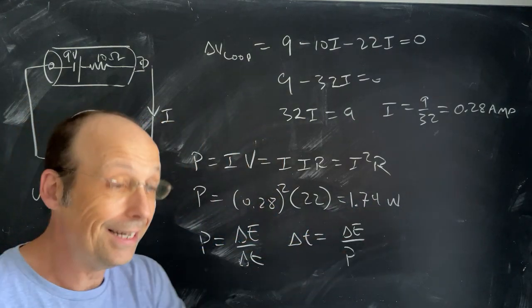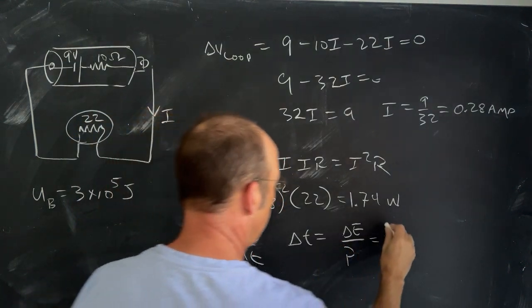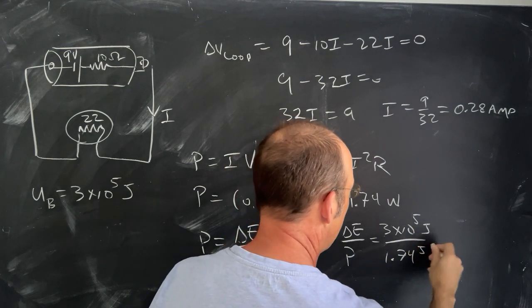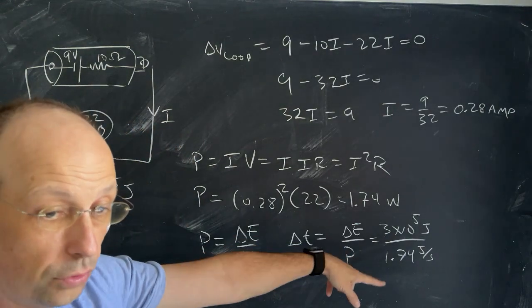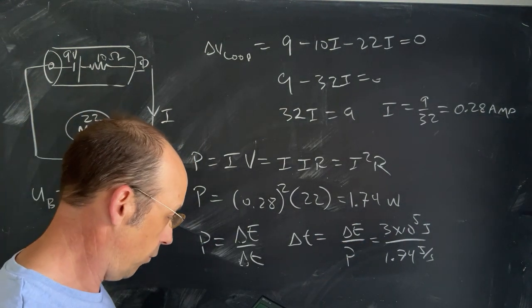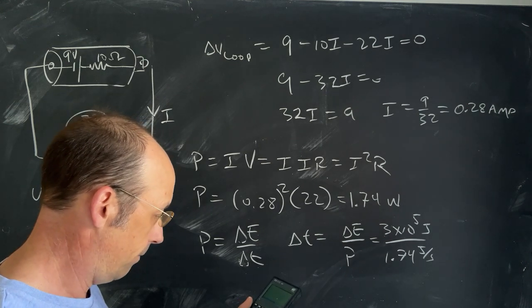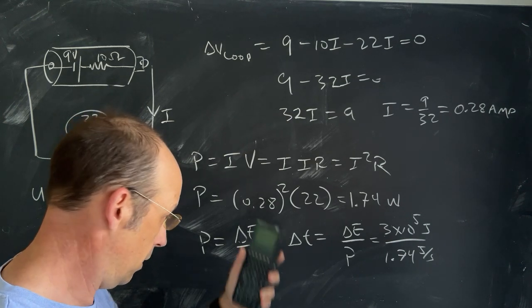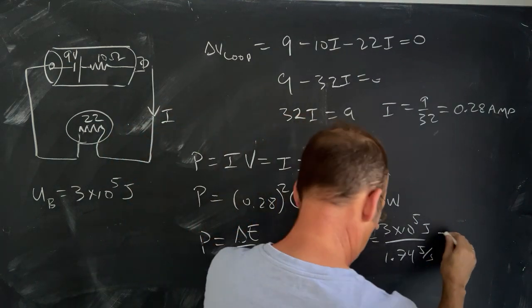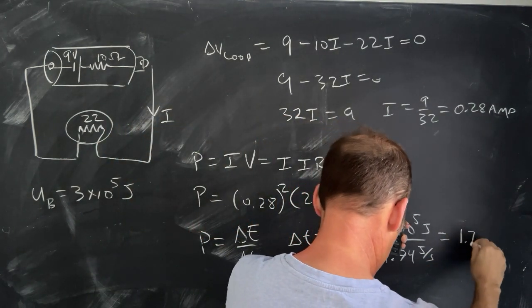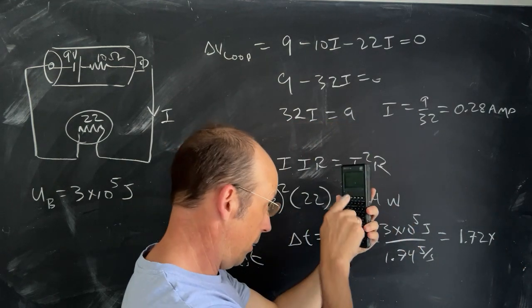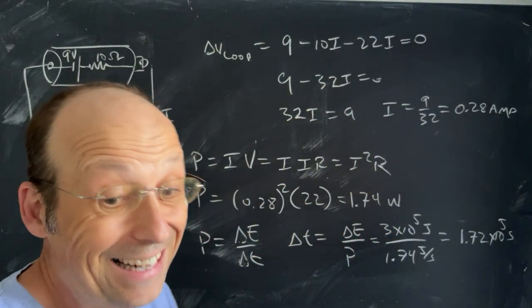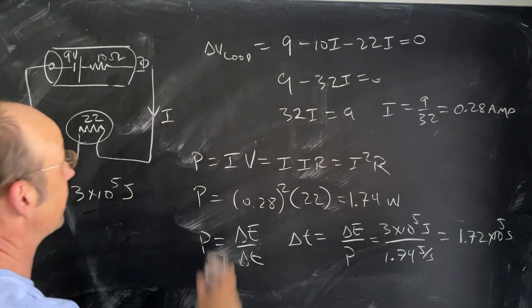The power of watt is a joule per second. So this is going to be equal to the energy, 3 times 10 to the 5th joules, divided by the power, 1.74 joules per second, just so you can see. The joules cancel and I'm going to get the answer in seconds. So 3 times 10 to the 5th divided by 1.74, and I get 1.72 times 10 to the 5th seconds. That's technically the right answer, but let's not leave it at that.